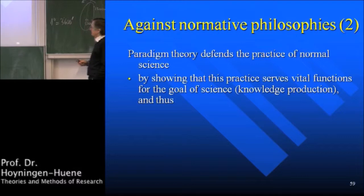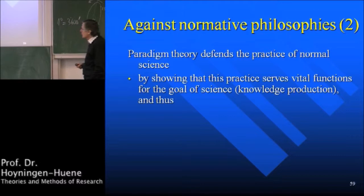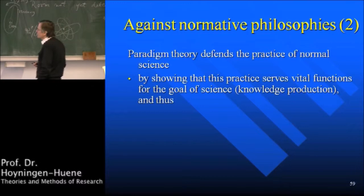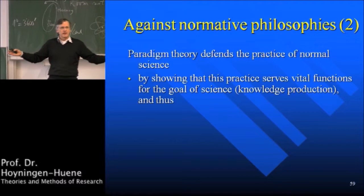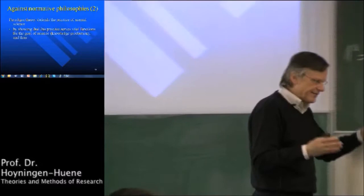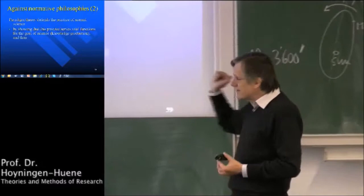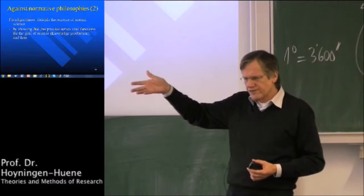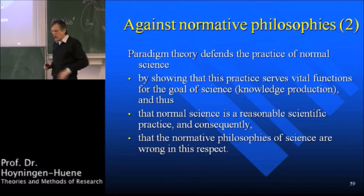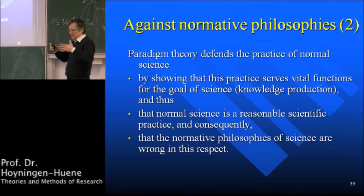Here is how it works: paradigm theory defends the practice of normal science by showing that this practice serves vital functions for the goal of science. What is the goal of science? Abstractly speaking, it's fairly simple — it's knowledge production. Science must produce scientific knowledge. Just as the plant industry is supposed to produce good plants, science is supposed to produce good scientific knowledge.